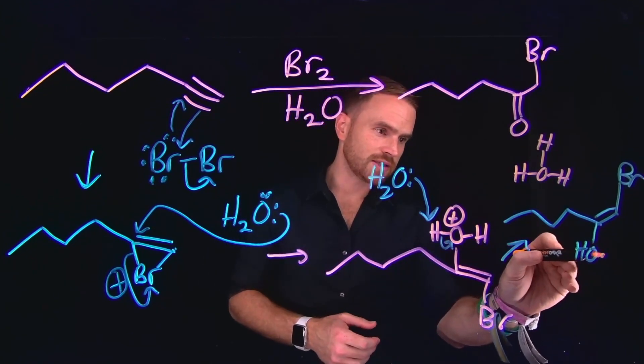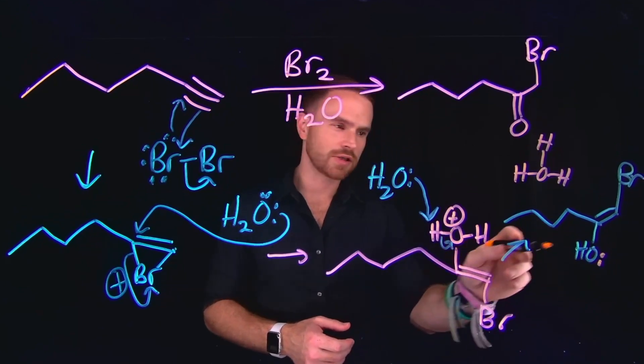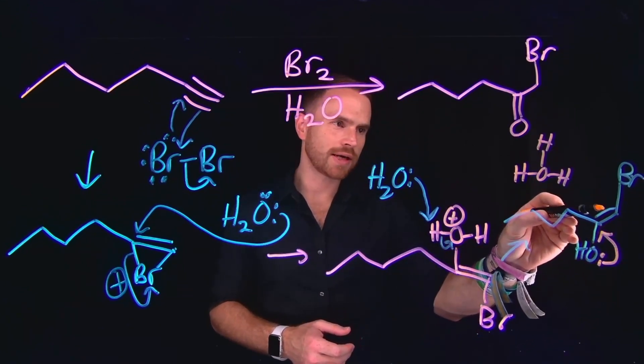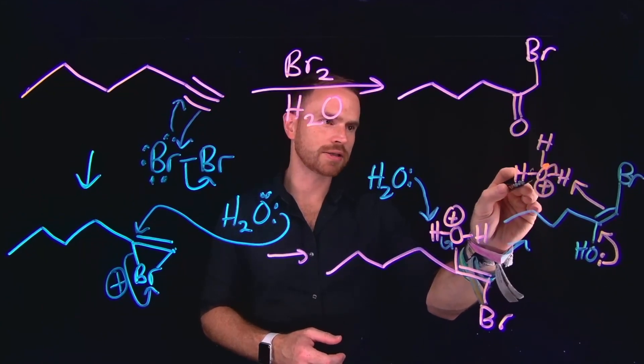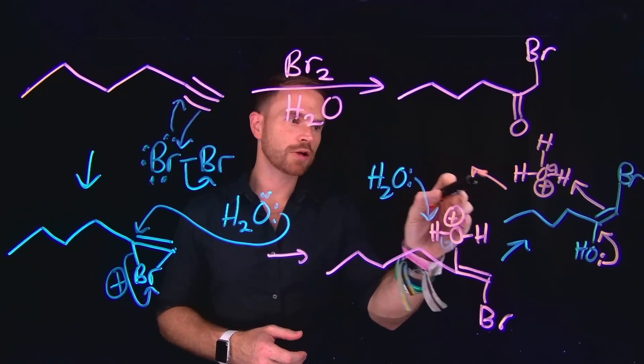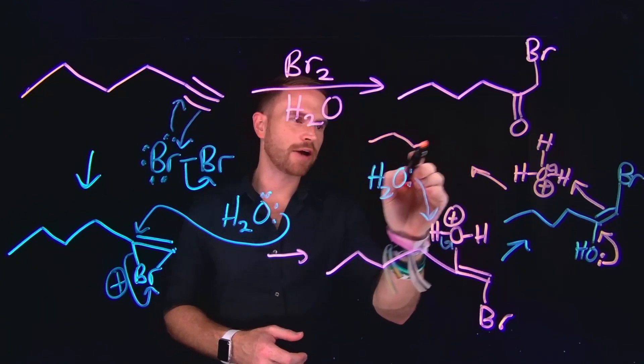Specifically, if these lone pairs of electrons on OH come down, this will make the alkene come and grab one of the protons from our hydronium ion to remake water, and leaving us with a new molecule, which is almost at our final step.